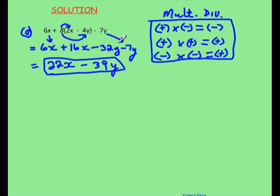And we bring back the negative 7y that we're not using. Now in this step we have like terms. 6x plus 16x, these are like terms so we can simplify them. And when we simplify like terms, if the signs are the same we add the numbers, in this case the coefficients, and keep the sign of the larger.